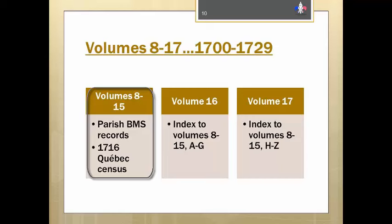In volumes 8 through 17, you will find the parish baptisms, marriages, and burials. Volume 8 contains sick lists as well as the 1716 census for Quebec. Volume 11 has the very small 1700 census of Mont-Louis, and the Montreal sick list is in Volume 24.